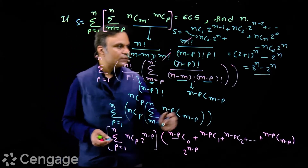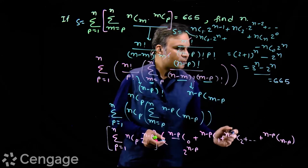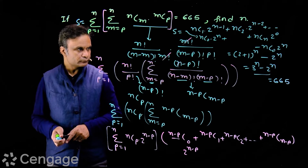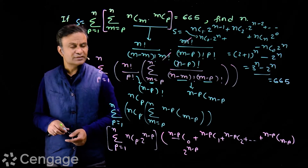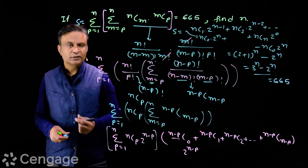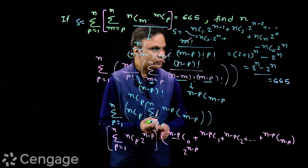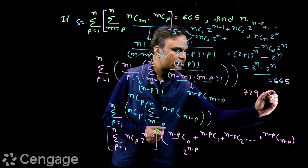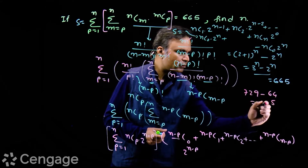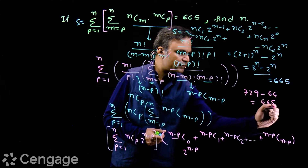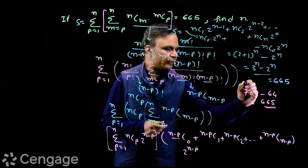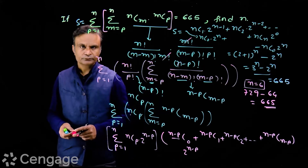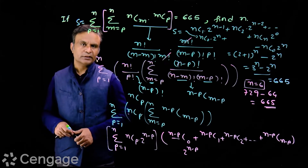This sum is given as 665. So 3^n minus 2^n equals 665. We try n equals 6: 3^6 is 729, 2^6 is 64, and 729 minus 64 equals 665. So the value of n is equal to 6. Here we have a similar kind of equation. Let us try some more questions in this group.